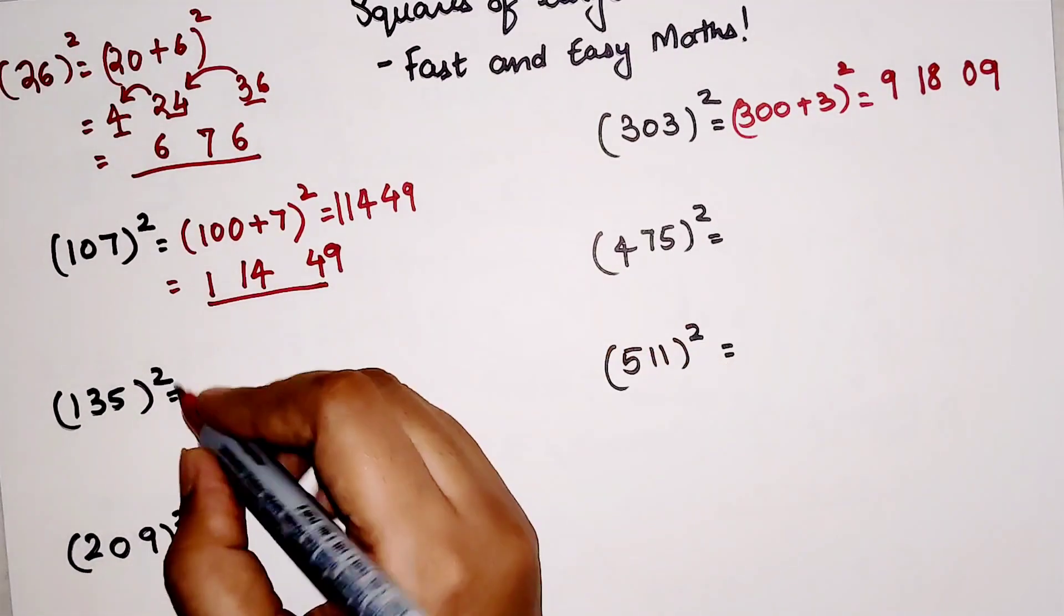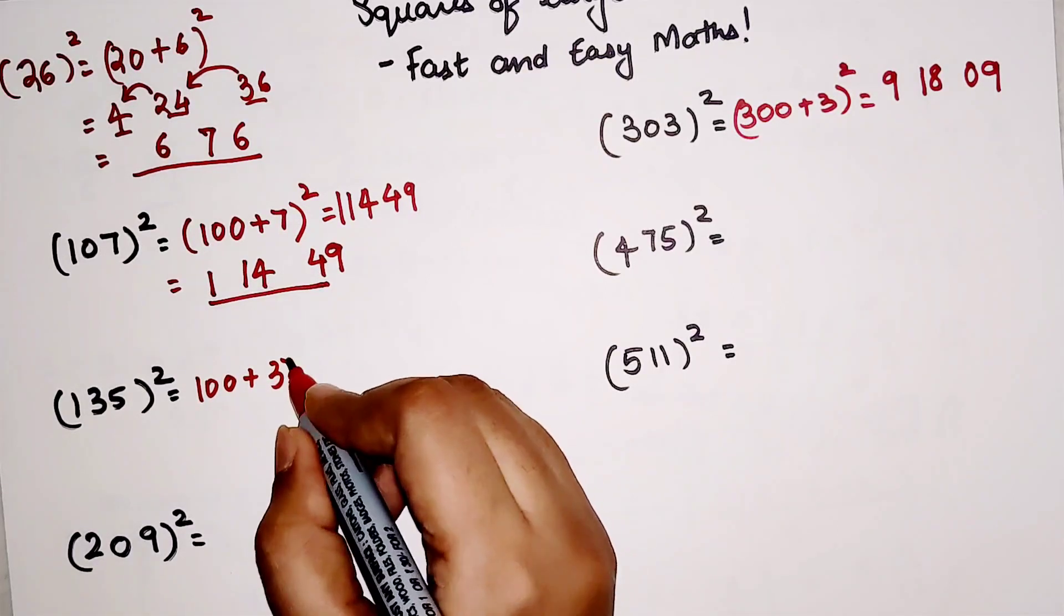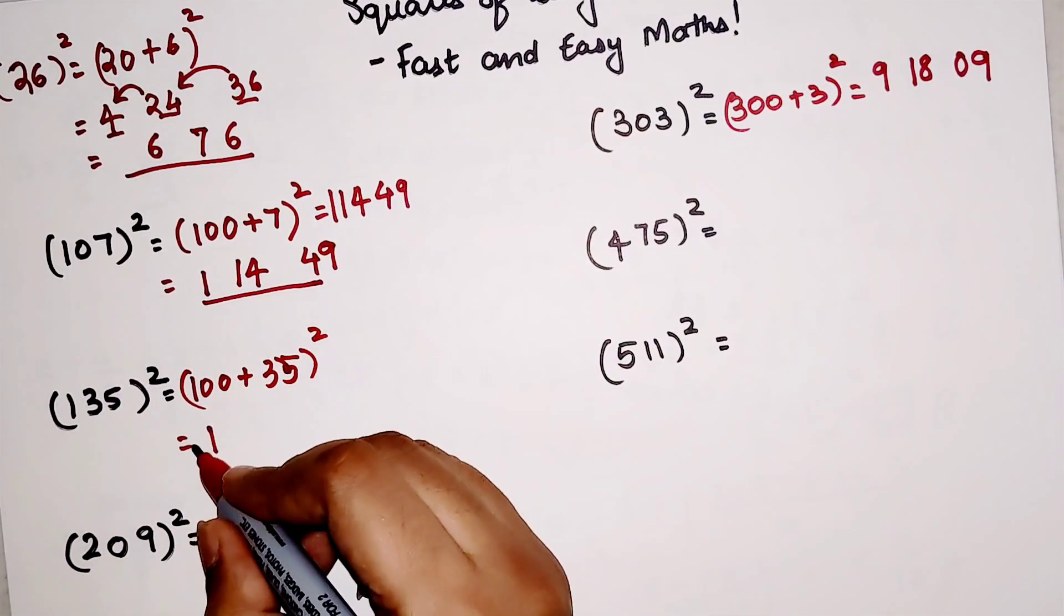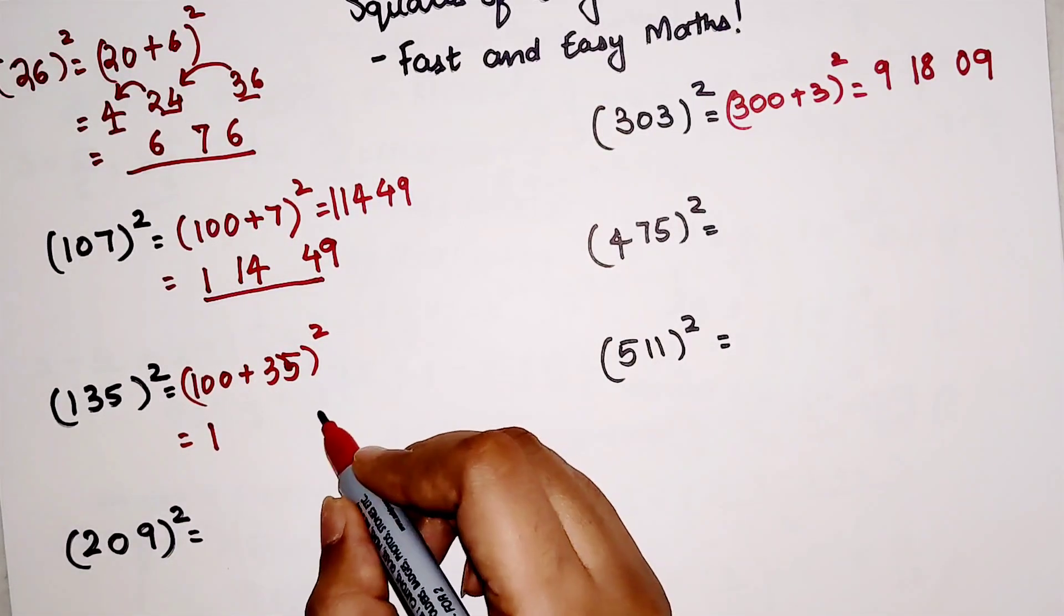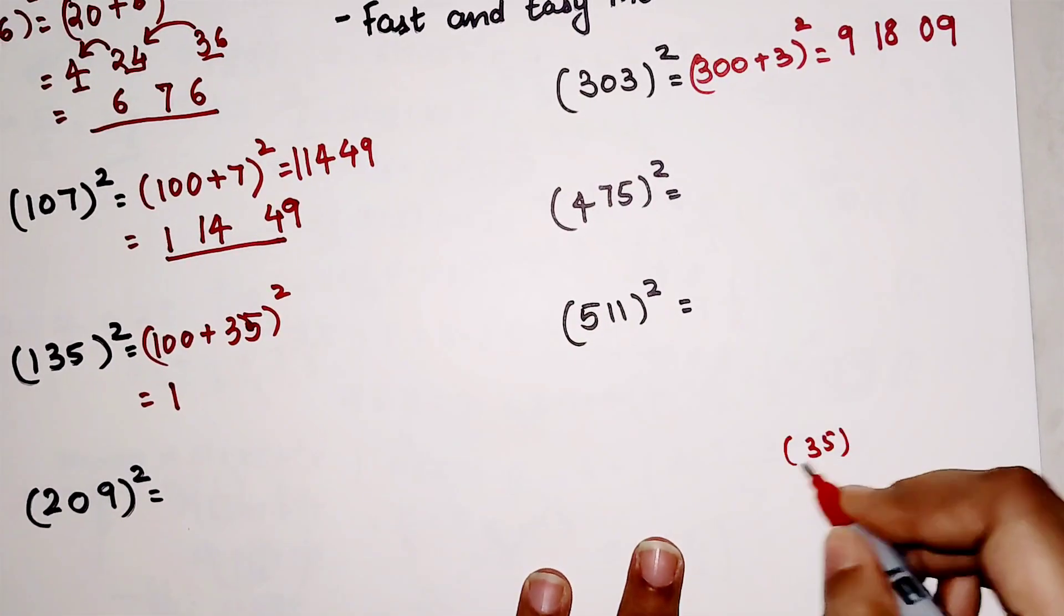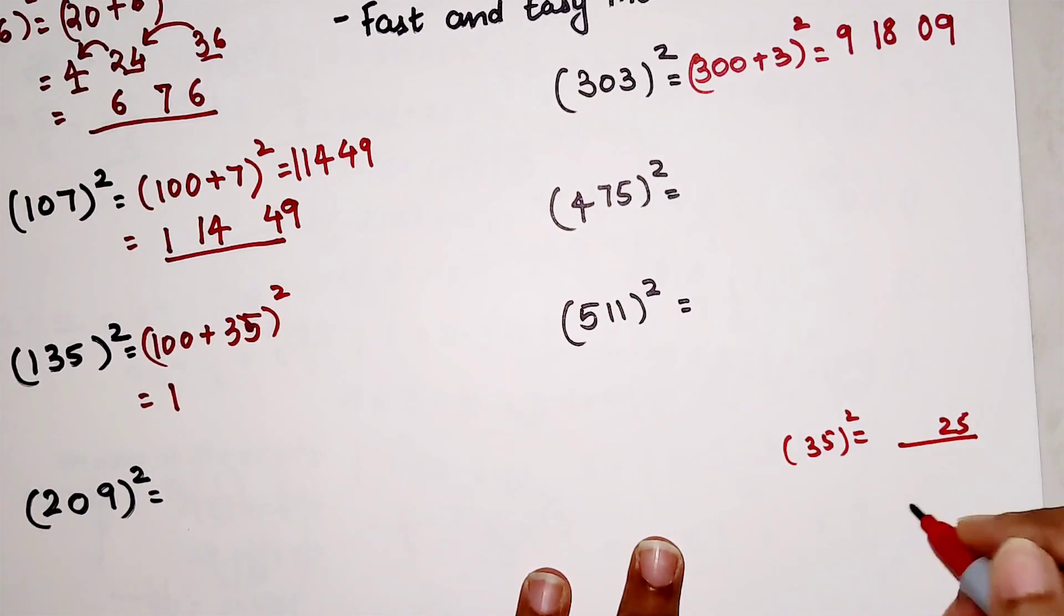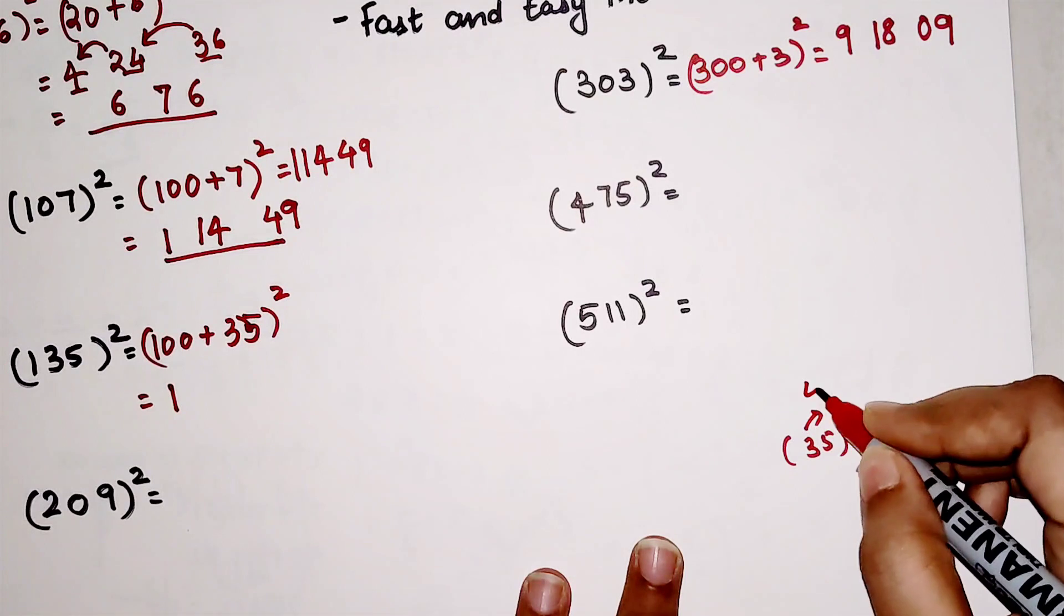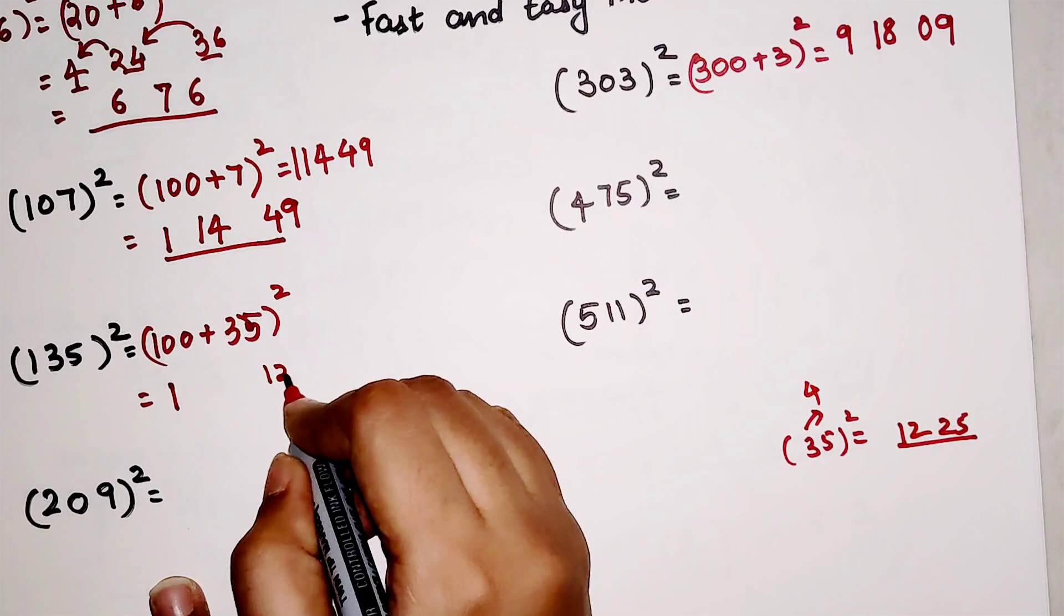So let's very quickly do 135². This is (100 + 35)². So we will write square of 1 which is 1. Then the square of 35—please understand, any number ending in 5, the last part of your answer is 25, and the first part will be 3 multiplied by the number coming next to it, which is 4. 3 into 4 is 12, so 1,225. So here your answer is 1,225.